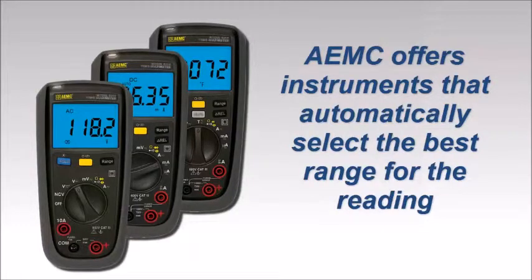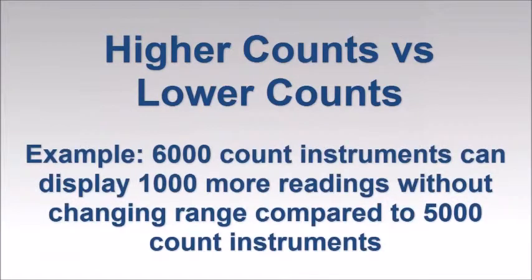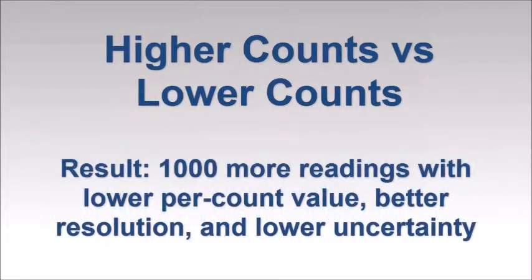This also illustrates the advantage of higher count instruments. For example, a 6,000 count multimeter can display 1,000 more readings than a 5,000 count model, without changing to the next higher range. Since these 1,000 additional readings will have a lower per count unit value, they will result in a lower uncertainty.